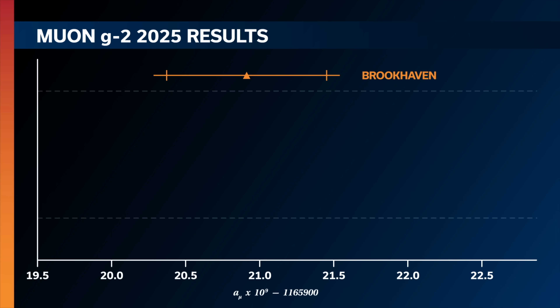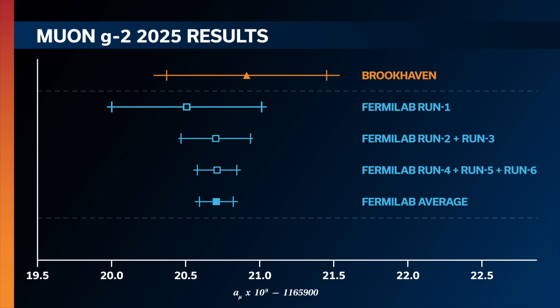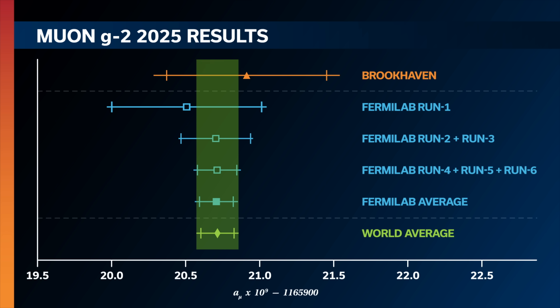At the top of the plot you can see the result from Brookhaven from 2006 — the result that was in tension with the Standard Model prediction and launched our whole enterprise at Fermilab. Following that is the result from our first year of running, then considerably smaller error bars from runs 2 plus 3, and now even smaller error bars from our final result for runs 4 through 6. Below that is the combined average for all six years of running, and at the very bottom, the new experimental world average. It was really exciting to see it land right in agreement with our previous results.